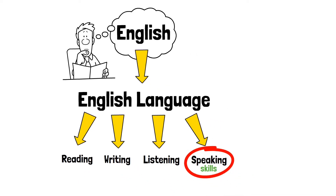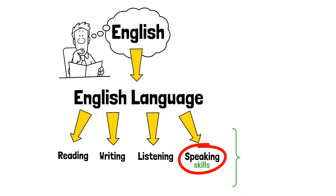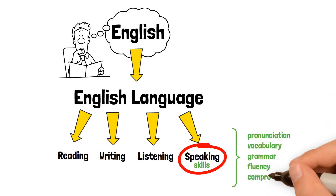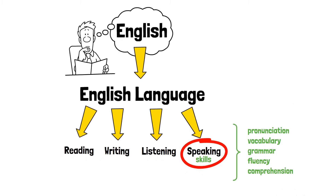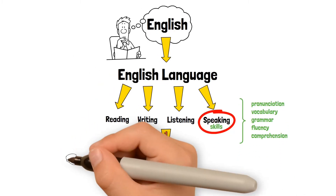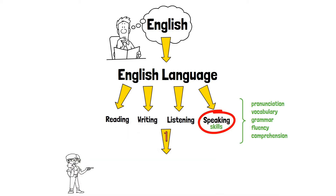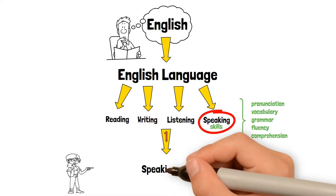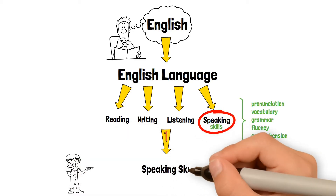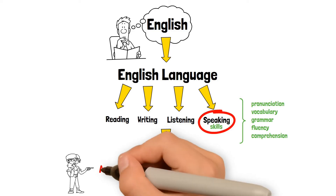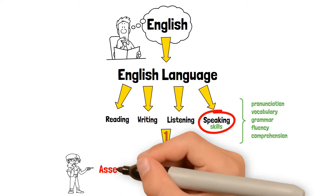Once you have established a specific topic to study, then you put together these five components to formulate a compelling research title. 1. Write the action to undertake. If you want to mention in the title how you proceed with your research, then write the action word.